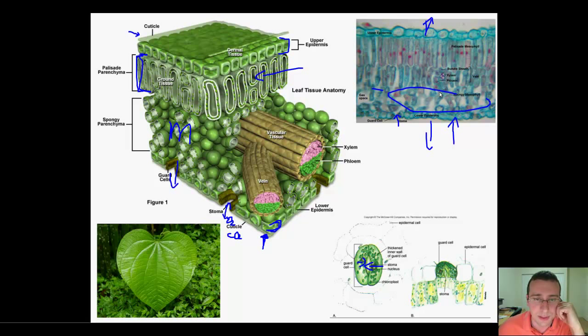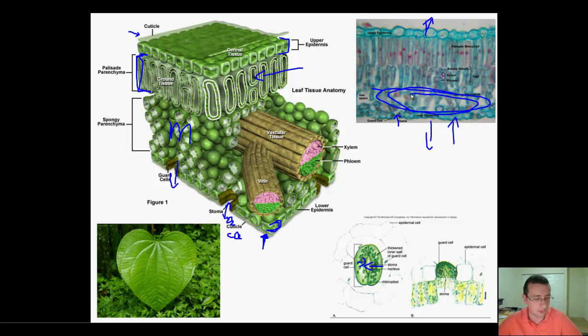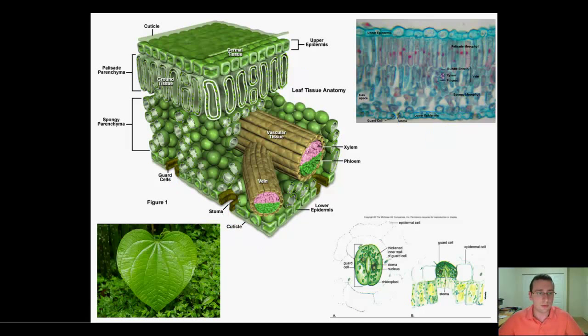Because the guard cells are right there, the spongy mesophyll will actually have a lot of empty space or gas. It needs that because this layer is doing the gas exchange involving photosynthesis. So this is the basic structure of a leaf.